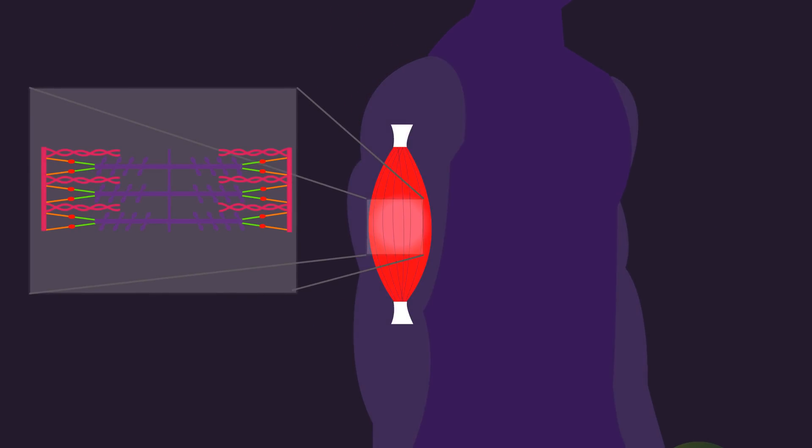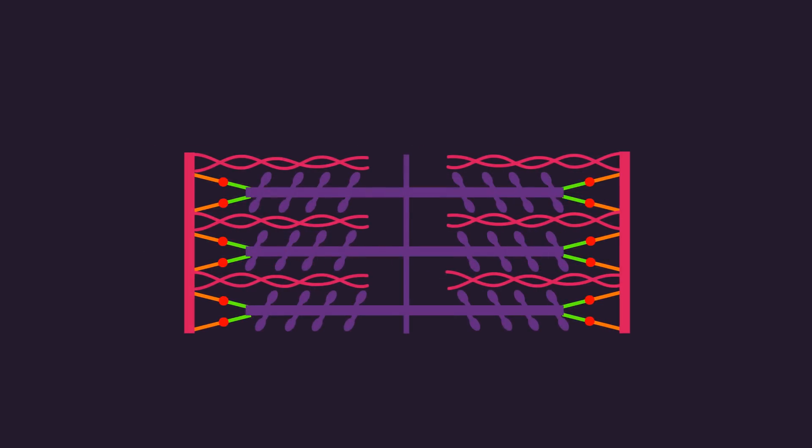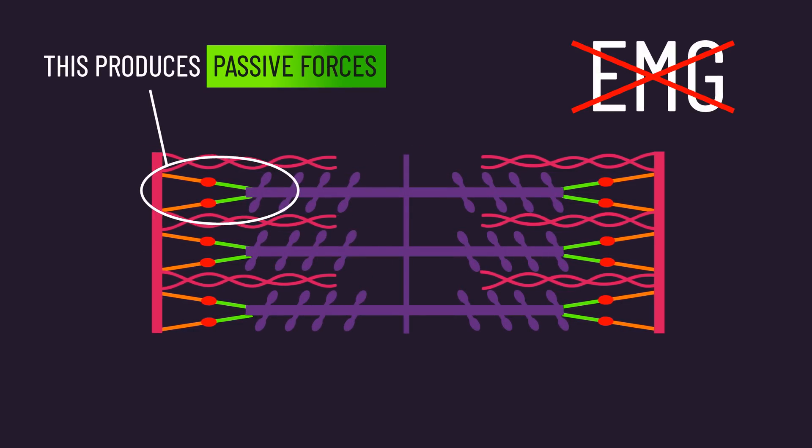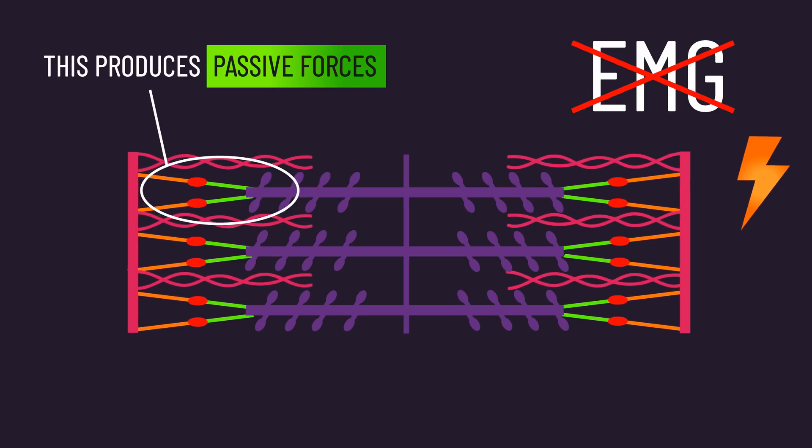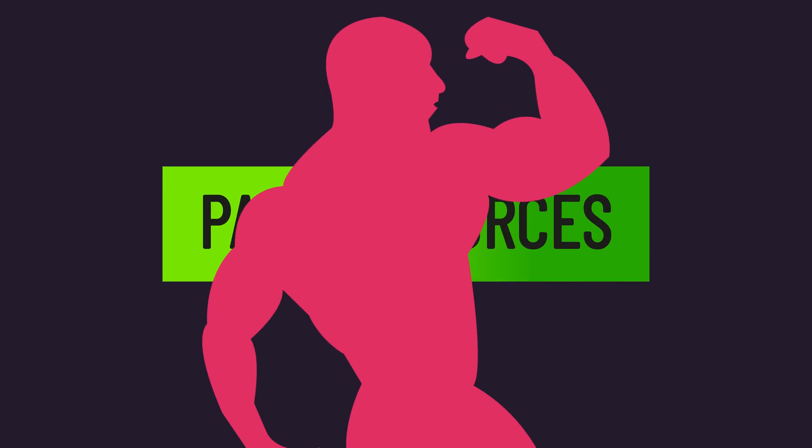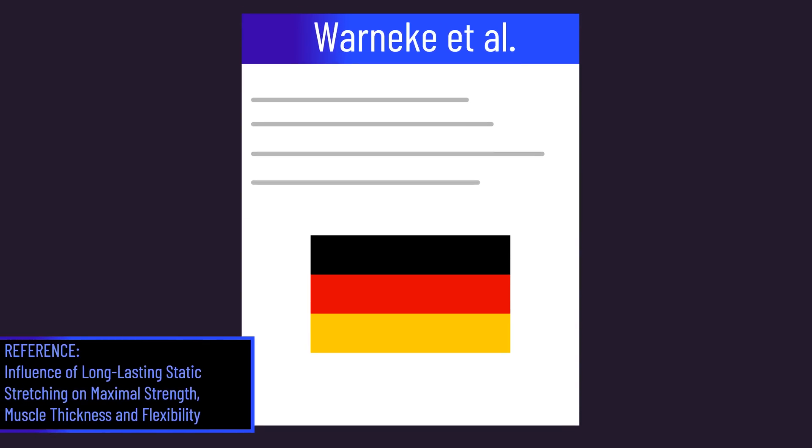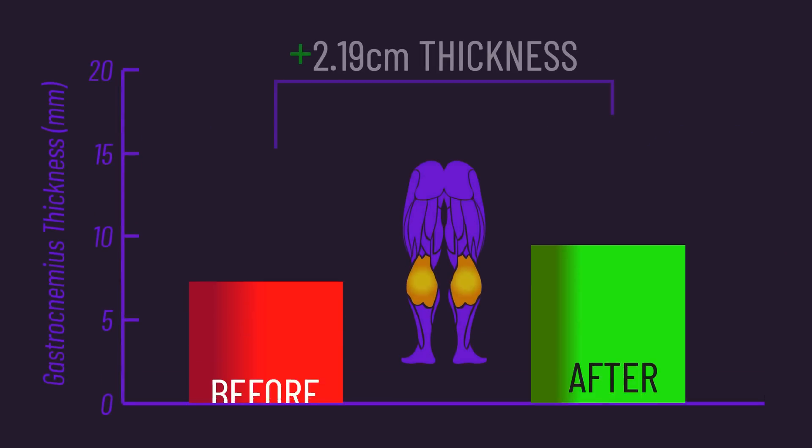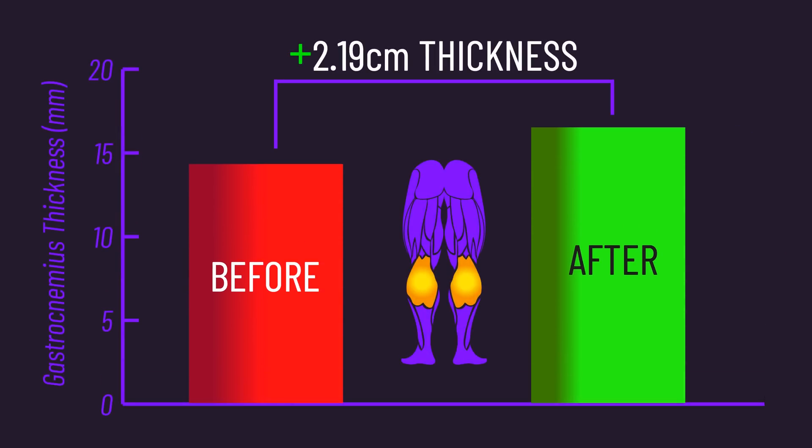Your muscles actually have elements in their force-generating units that can produce passive forces when stretched, and EMG does not measure any of these passive forces as it only records electrical stuff. This is noteworthy, as the literature indicates passive tension stimulates muscle growth. For example, a new German study indicates that intense static stretching of the calves produced notable gastrocnemius growth.